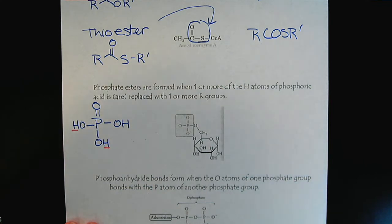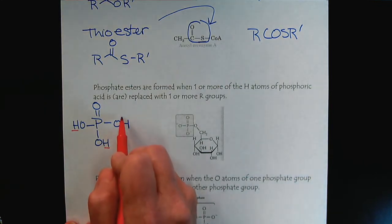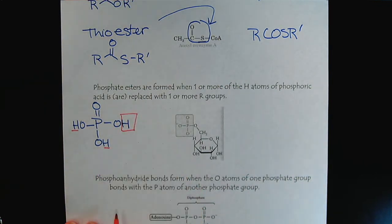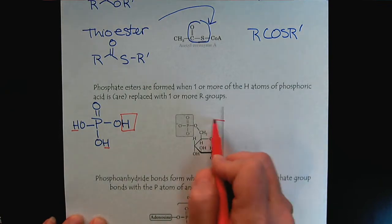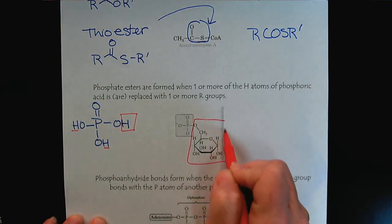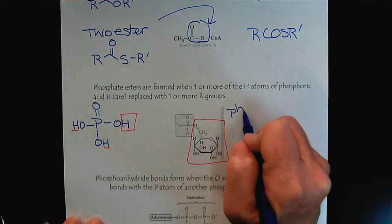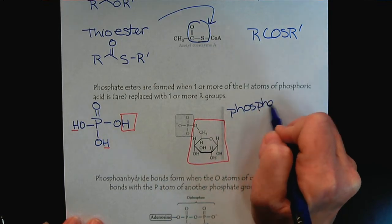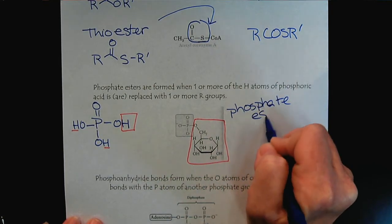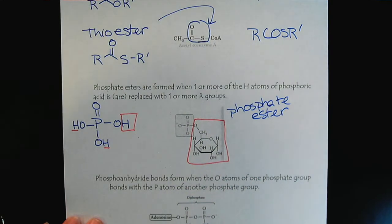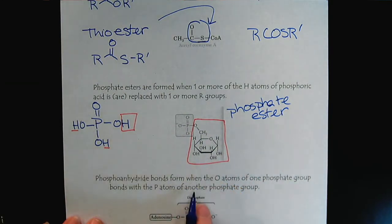How the phosphate ester forms is this hydrogen atom right here has been replaced by this glucose molecule. So we would describe this compound right here as a phosphate ester. In particular, because this is a glucose molecule,